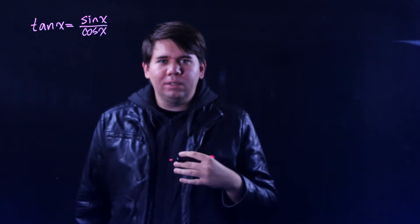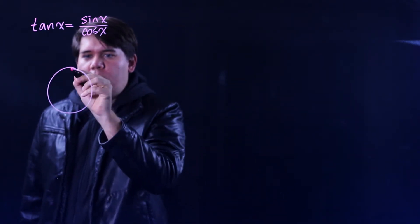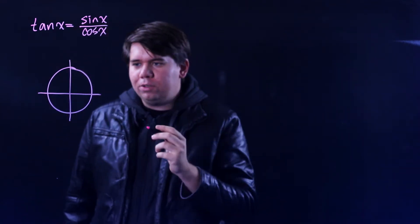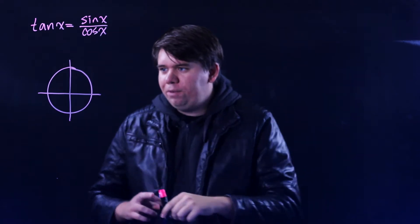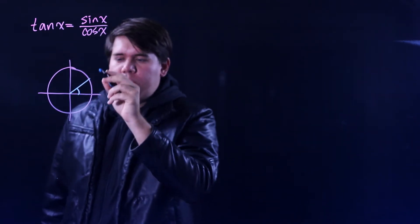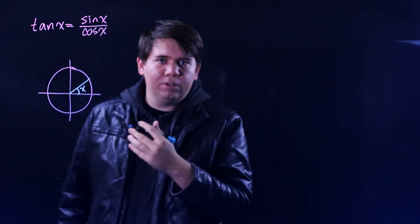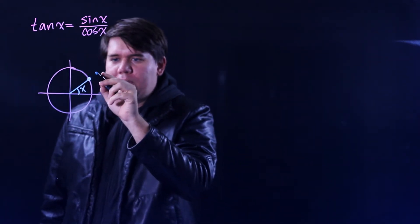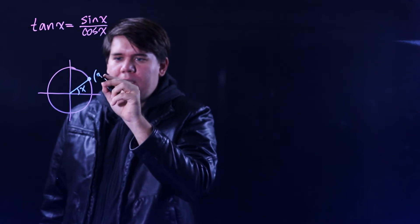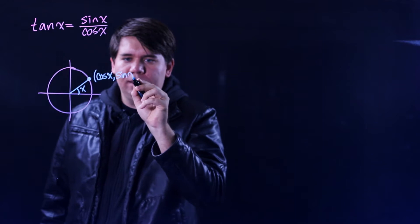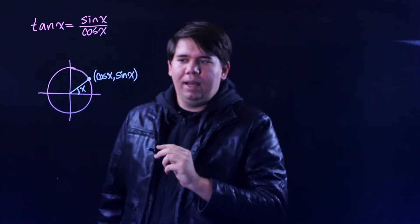We often think about sine and cosine in relation to the unit circle — the circle of radius 1 centered at the origin. This unit circle has the property that if you take any angle, the coordinates of that point will be given by cosine of the angle and sine of that angle.